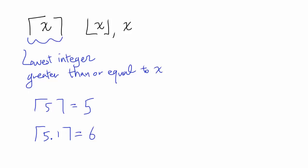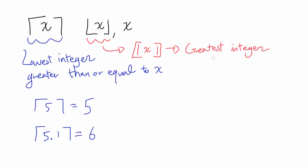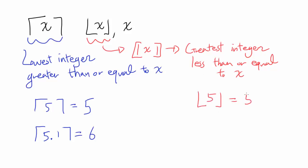So now let's look at floor of x. This is sometimes denoted as the greatest integer function, and you sometimes write it like this in textbooks. It is the greatest integer less than or equal to x. So floor of 5 is 5, and floor of 5.1 goes down to the nearest integer, which is 5.